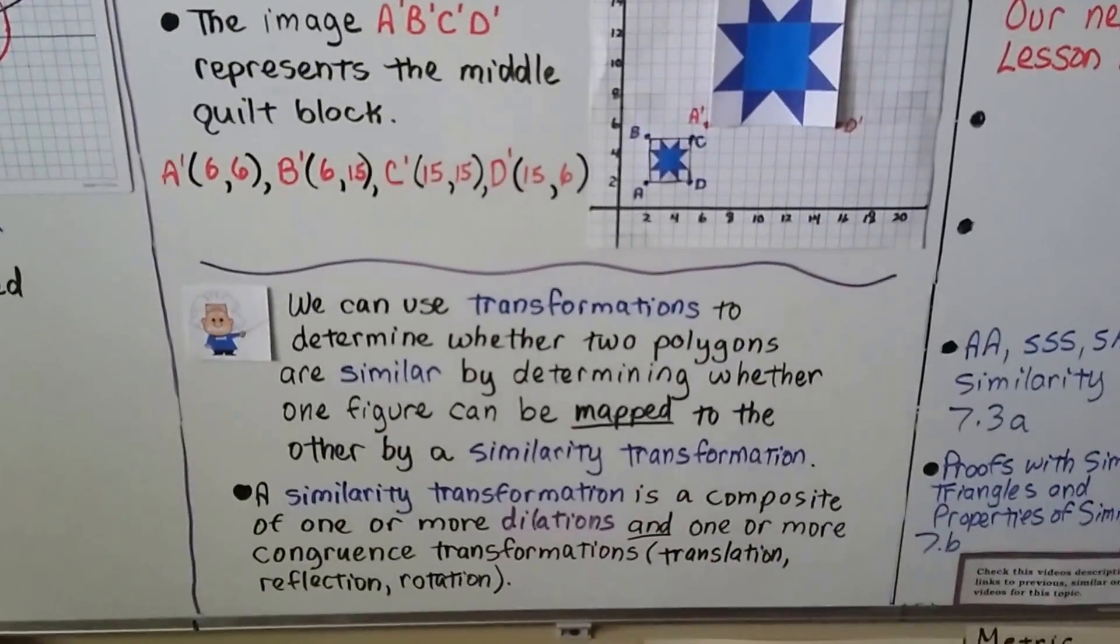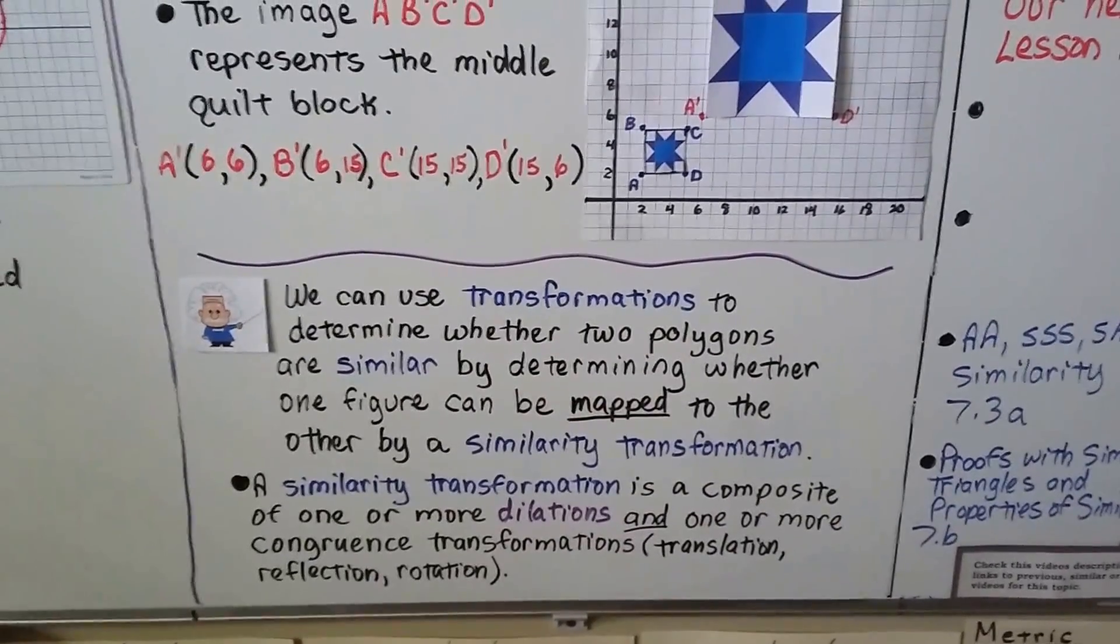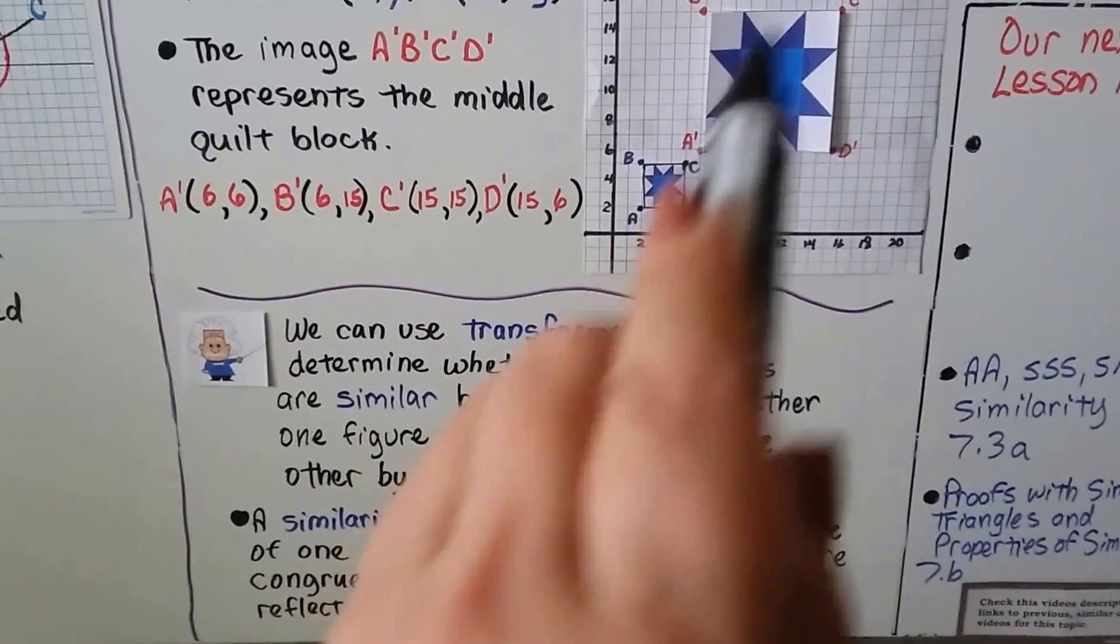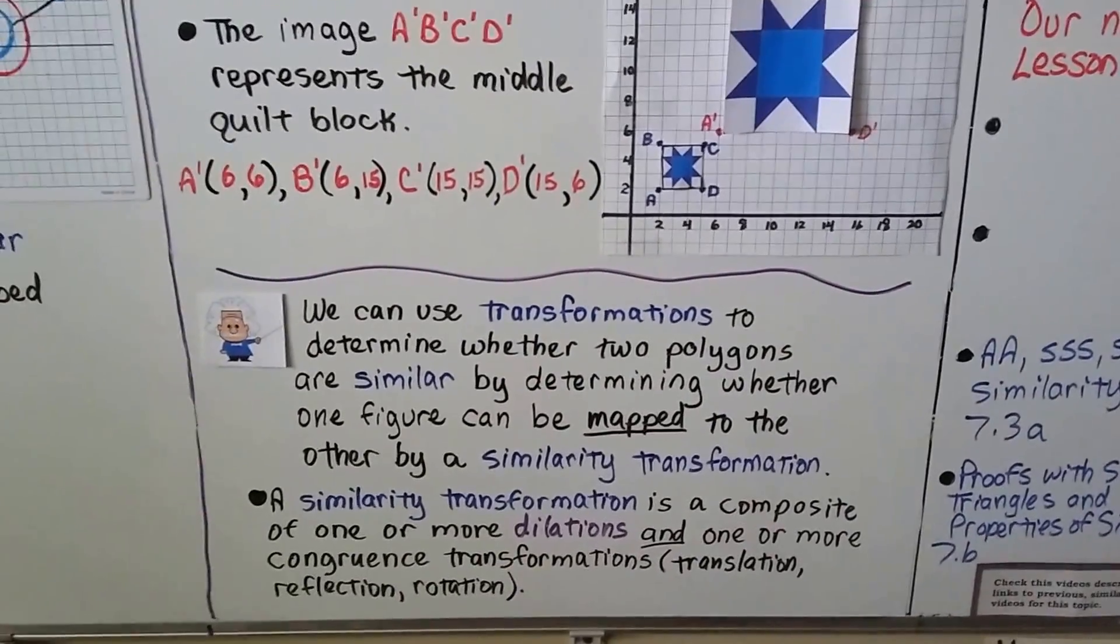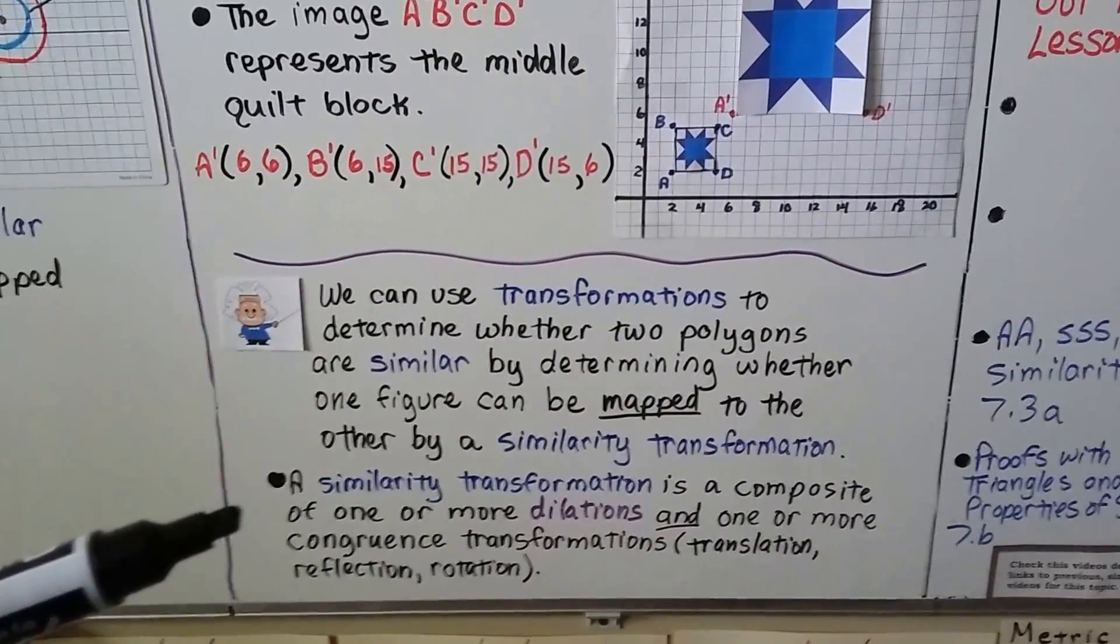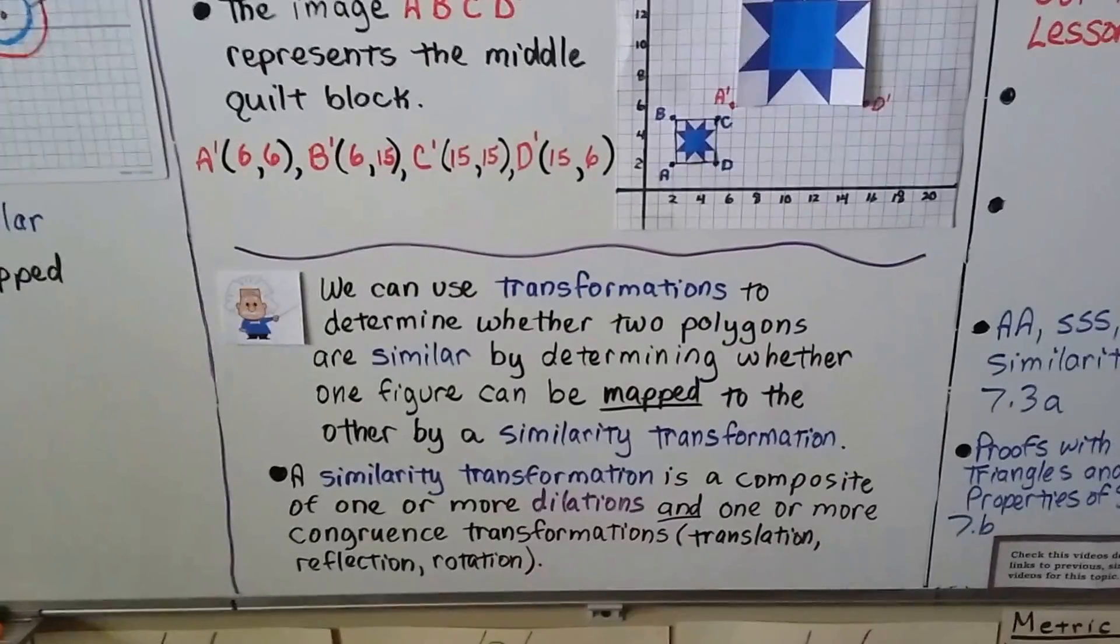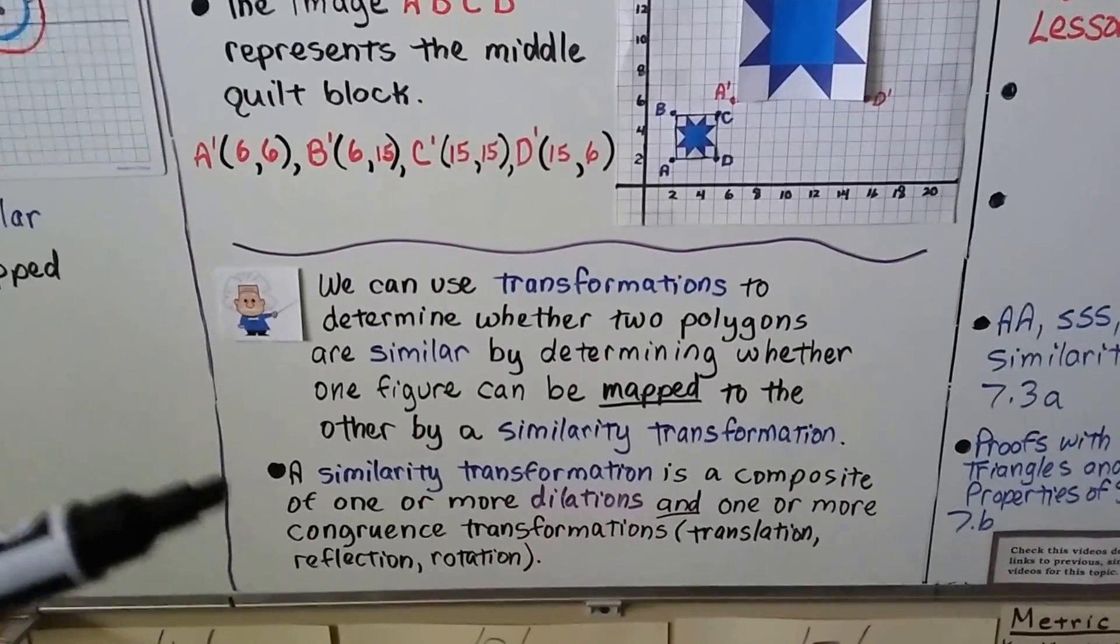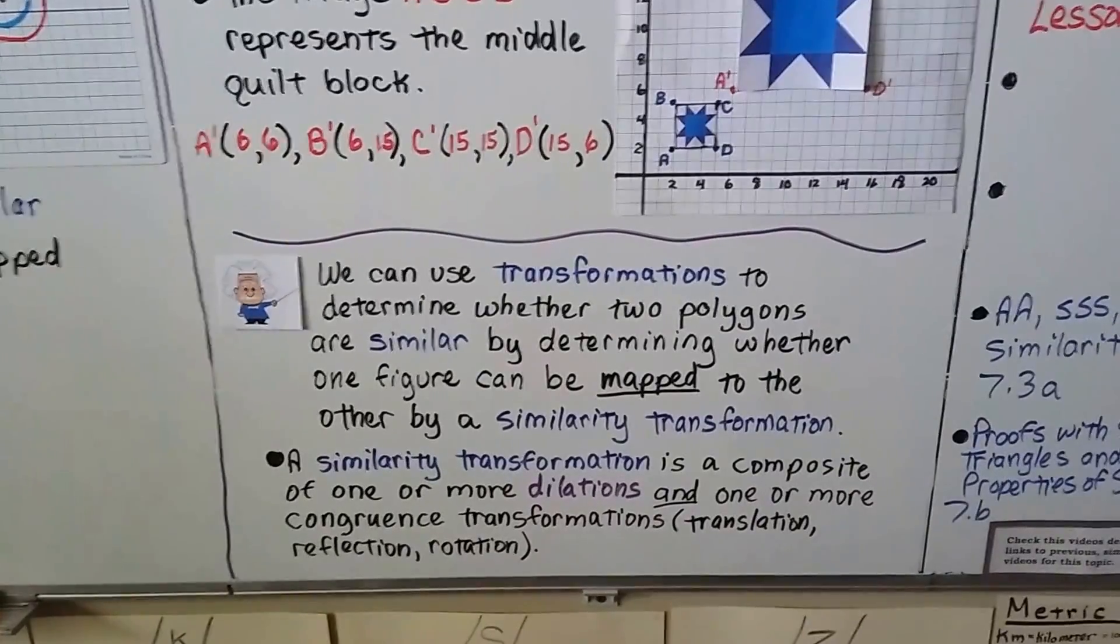So we can use transformations to determine whether two polygons are similar by determining whether one figure can be mapped to the other by a similarity transformation. And a similarity transformation, we learned this in the last video, is a composite. Remember, composite means it's made of a bunch of things. It's a composite of one or more dilations and one or more congruence transformations.